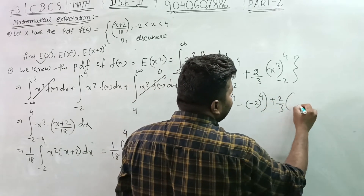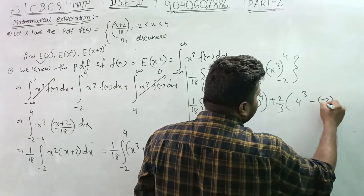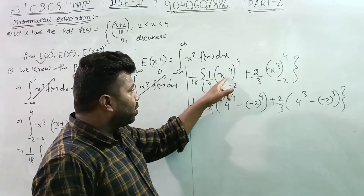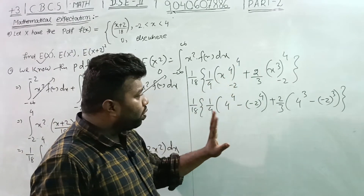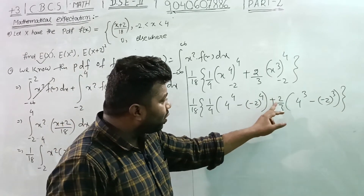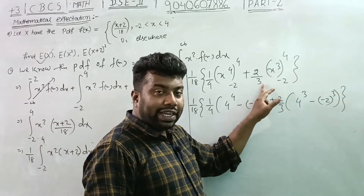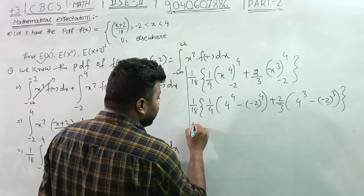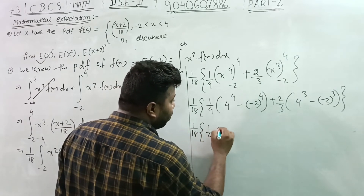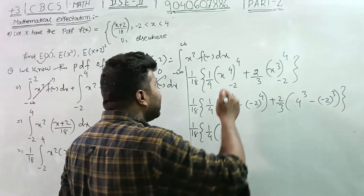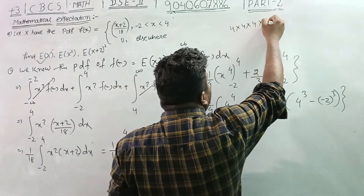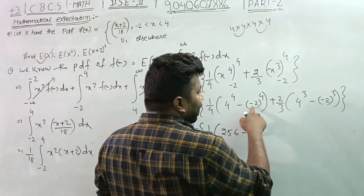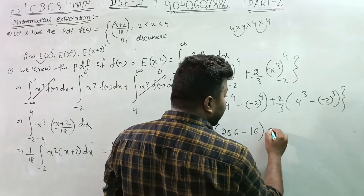Integrating gives 1 by 18 times: x⁴ by 4 with limit -2 to 4, plus 2 times x³ by 3 with limit -2 to 4. So 1 by 4 times (4⁴ minus (-2)⁴) plus 2 by 3 times (4³ minus (-2)³). That is 1 by 4 times (256 minus 16) plus 2 by 3 times (64 + 8).